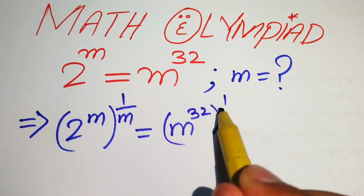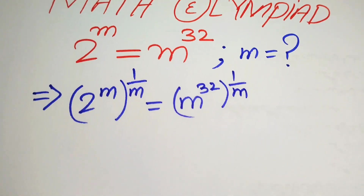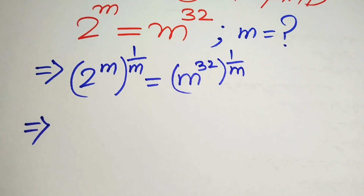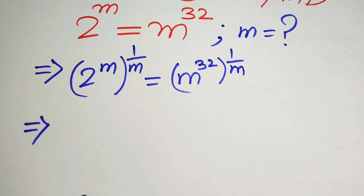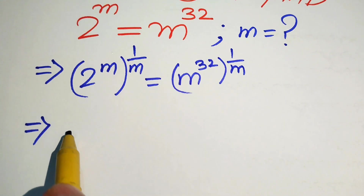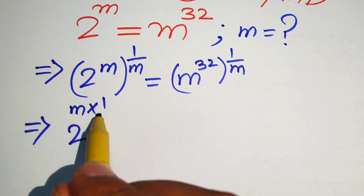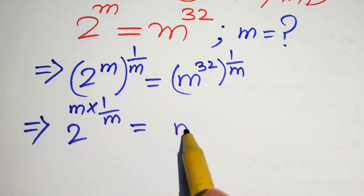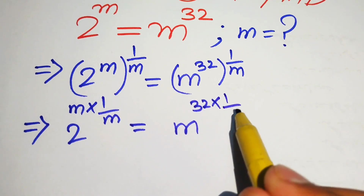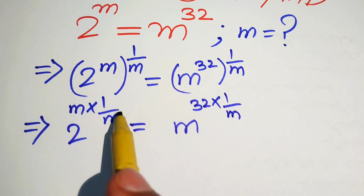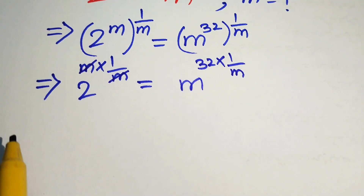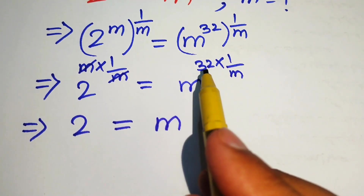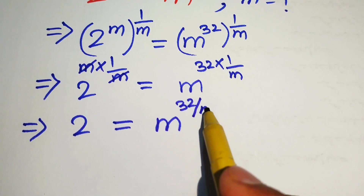We take the exponent 1 over m on both sides, and then we use the exponential law: if you have exponent to the exponent, these exponents are multiplied by each other. So m multiplied by 1 over m cancels out on the left, and we get 32 times 1 over m on the right. We obtain 2 equals m to the power of 32 over m.